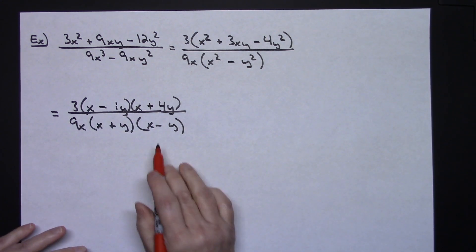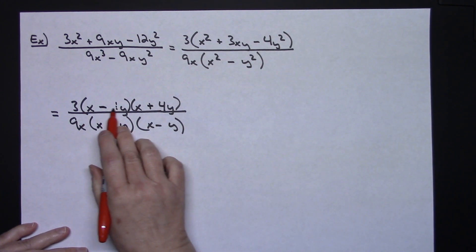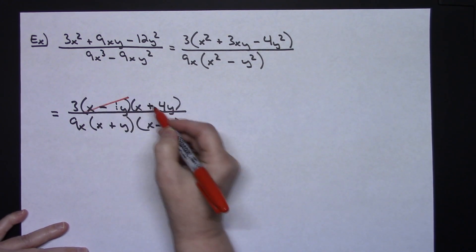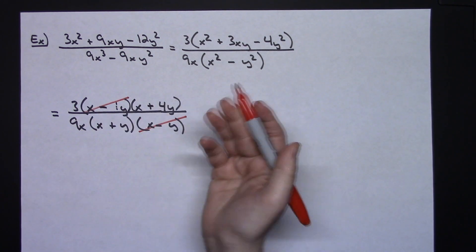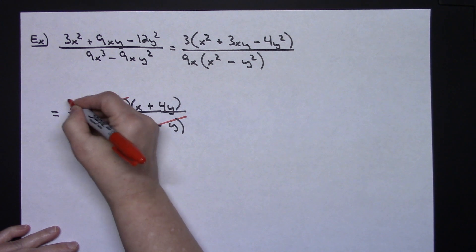All right now I'm going to start looking for things that I can cross out. I've got an x minus y here. I've got an x minus y here so both of those cross out. I also have 3 over 9 here. I could reduce that just like a regular fraction. 3 goes into 3 one time. 3 goes into 9 three times.